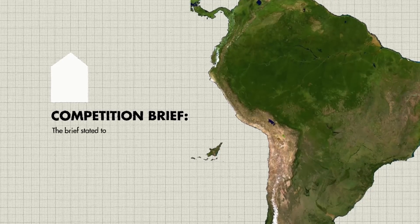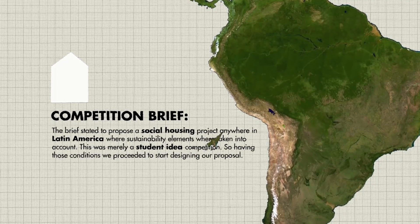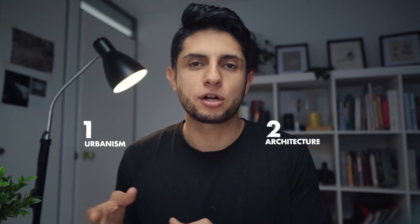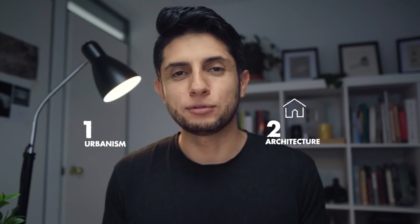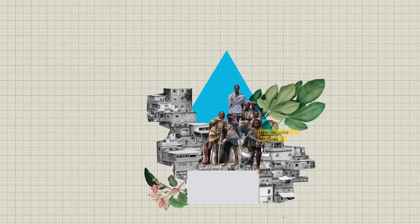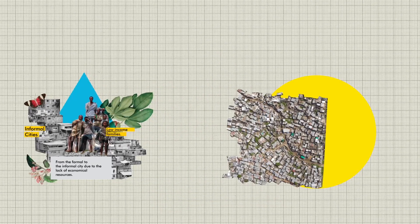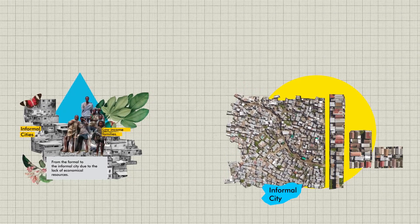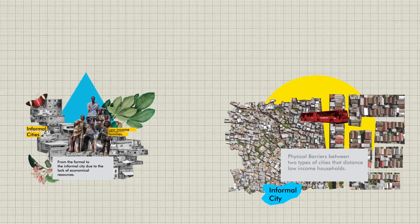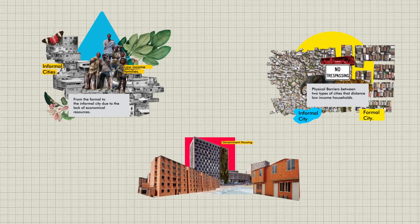The brief stated to propose a social housing project anywhere in Latin America where sustainability elements were taken into account. This was merely a student idea competition. Having those conditions, we proceeded to start designing our proposal. We saw the housing problem in Latin America as a problem of urbanism first and architecture second, meaning that in order to find the correct solution for a sustainable social house, we had to question and propose solutions for the context in which the housing was immersed. At a macro scale, we saw two main problems. First, low-income families had to settle in informal parts of cities to attain dwelling that met their basic needs. Second, due to the exacerbation of settlements in informal cities, there is a social and physical barrier between formal and informal cities. The peripheries of the metropolis are characterized by housing poor citizens, the marginalized, who have to commute for hours to their jobs. We also studied current housing projects created by government institutions that lacked a human factor to the architecture and urbanism being built.